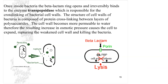Once the penicillin is inside the bacterium, the beta-lactam ring opens and irreversibly binds to an enzyme, transpeptidase, which is responsible for cross-linking of bacterial cell walls. In essence, it weakens the cell walls and allows water to permeate into the cell. This causes the osmotic pressure in the cells to increase and eventually rupture the cell, killing the bacteria.